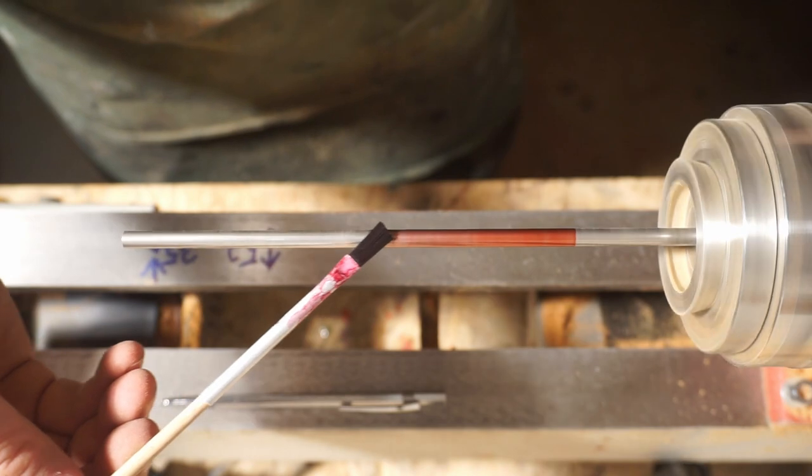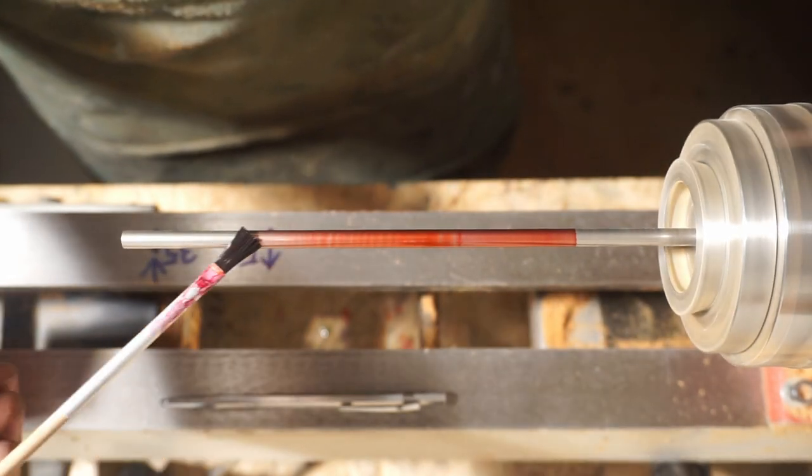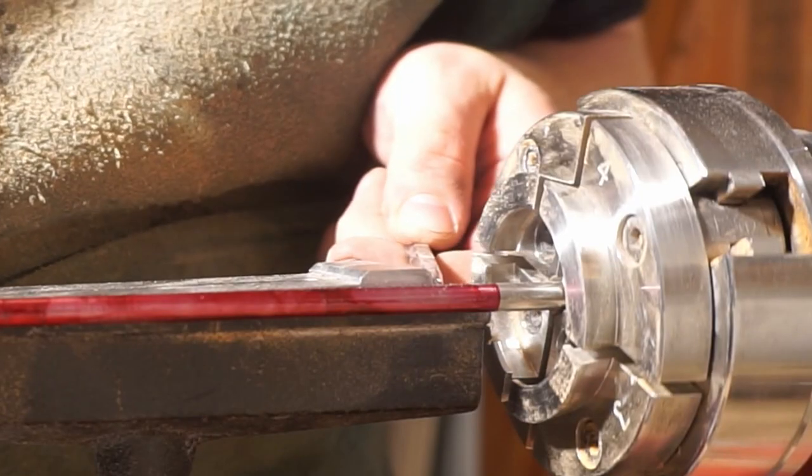Time for the beater shaft. I used red marking fluid to mark the total length and the length of the thread that is going to be cut.